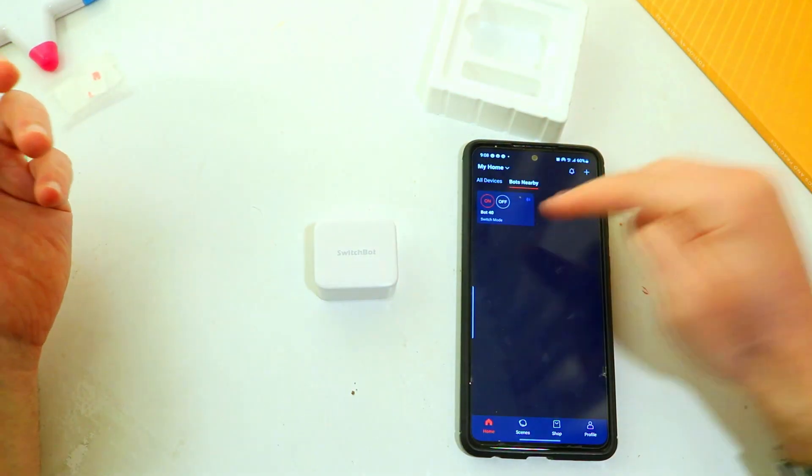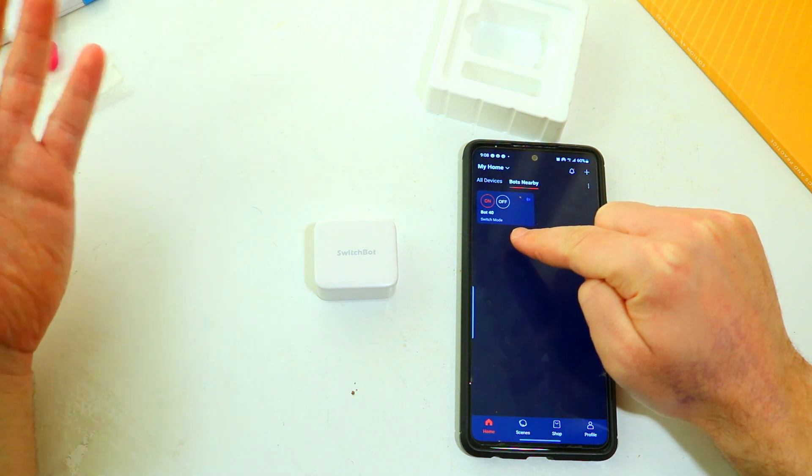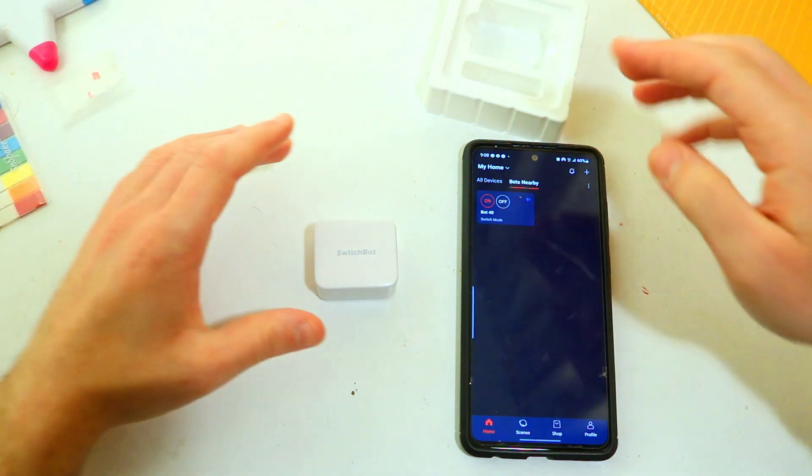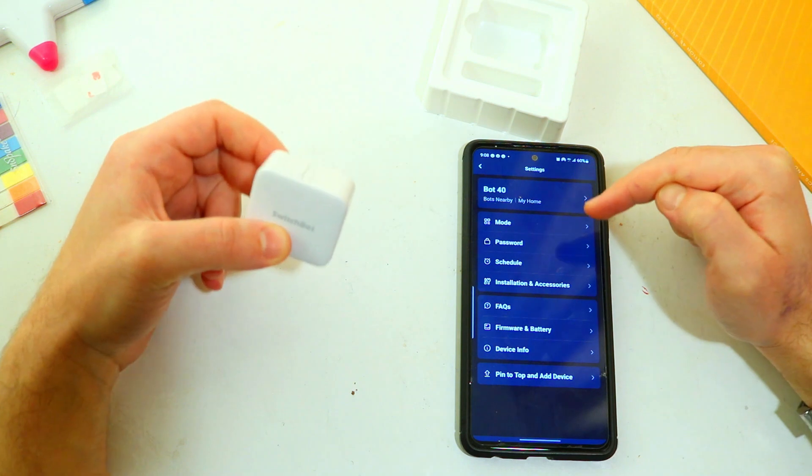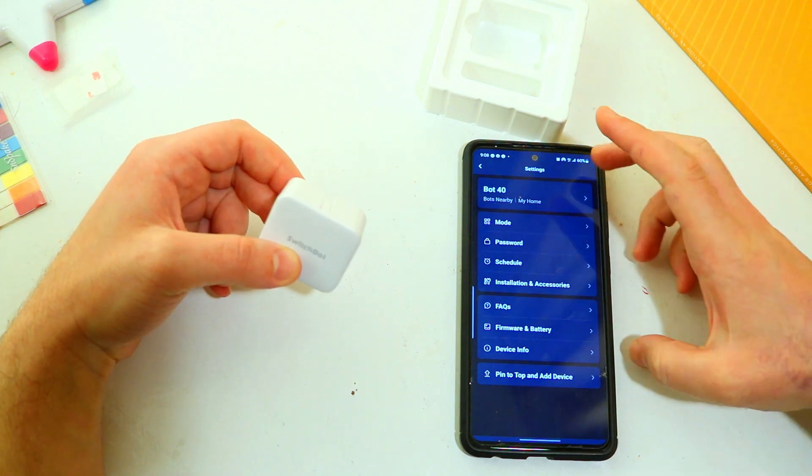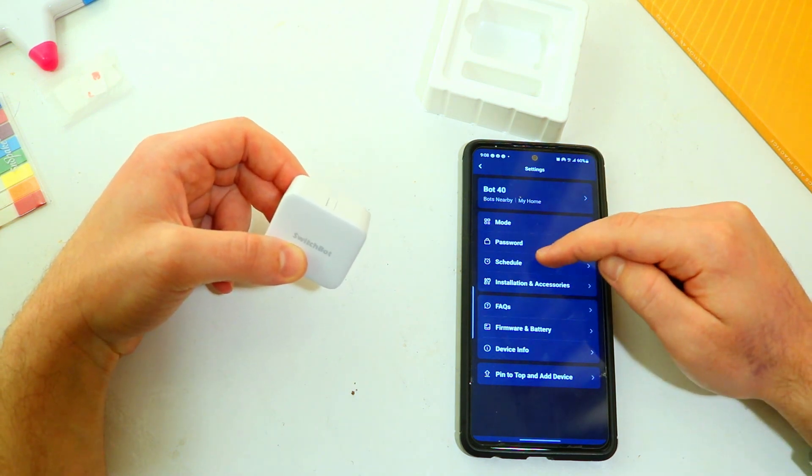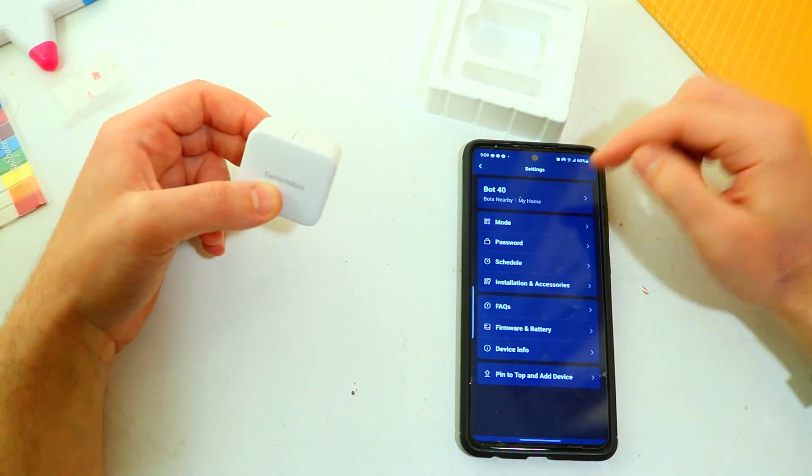Now let's just click our bots nearby and you can see it's detected by what it's named bot 40 but obviously you can name whatever you want. If you go into this you can see that there are different modes, you can set a password to it, you can even schedule it to turn on and off at different times of the day.